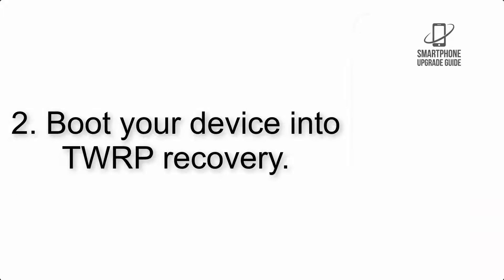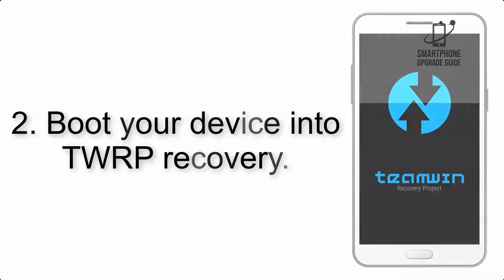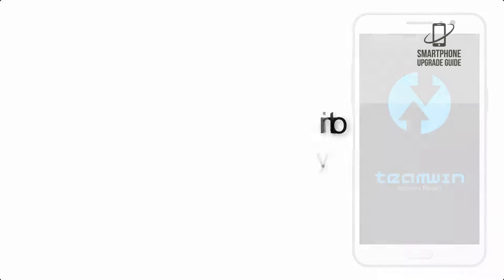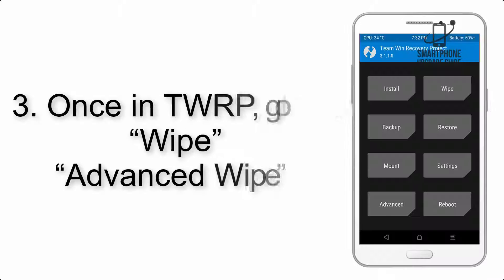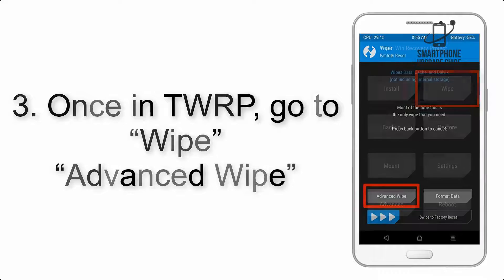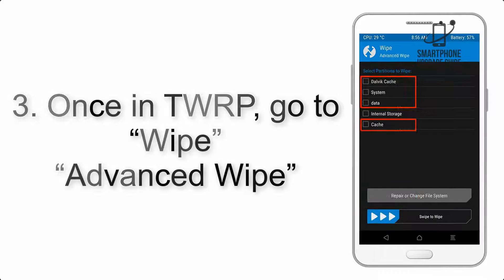Step 2: Boot your device into TWRP recovery. Once in TWRP, click on wipe, then Advanced Wipe, and select the checkboxes as shown in the image.